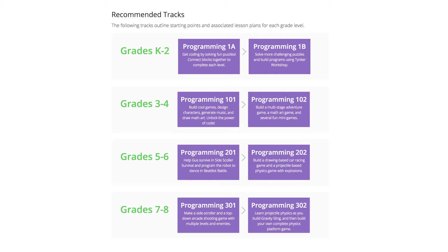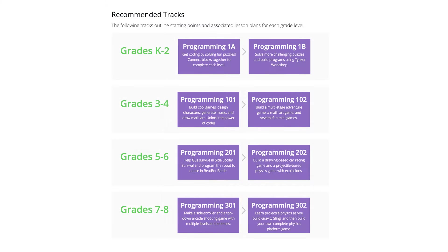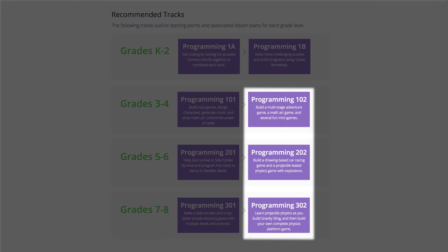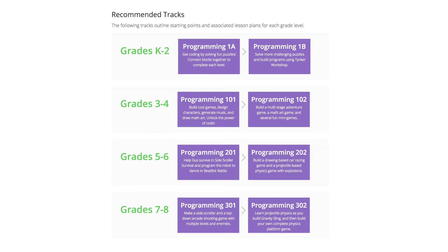There are two courses recommended per grade band. Programming 101, 201, and 301 are for students with no programming experience. The second course for each grade band — 102, 202, and 302 — are for experienced students who have previously completed a Tinker course.